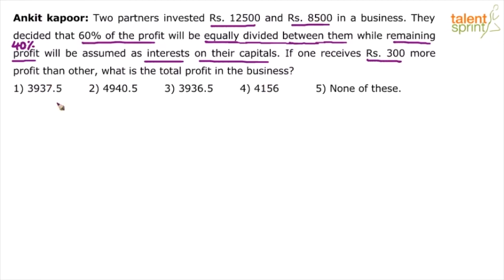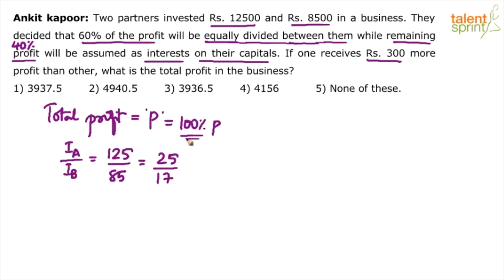Let us assume the total profit is P. Please do not write this in the exam - I'm writing it so you can follow. Now, find out the ratio of their investments. Investment of A to investment of B: 12,500 divided by 8,500, which is 5 into 25 and 5 into 17. So basically they have invested amounts in the ratio 25 is to 17. P equals 100% of P - let's talk in terms of percentage so it's easier to work on the question.